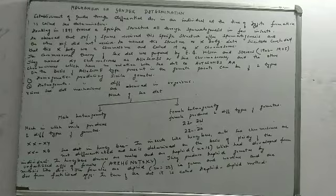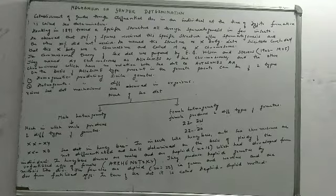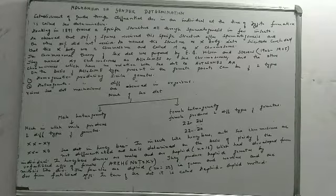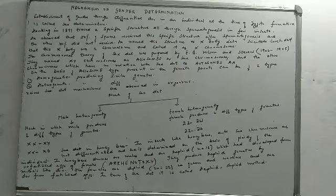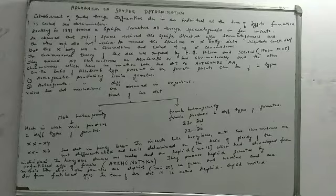There was a scientist — a botanist named Henking. In 1891, he did a wonderful, interesting experiment. He was observing the process of spermatogenesis in a few insects. He found a specific structure which could be traced throughout the entire process of spermatogenesis. He observed that 50% of the sperms received this specific structure after spermatogenesis, while the other 50% did not receive it.